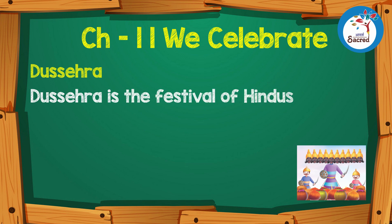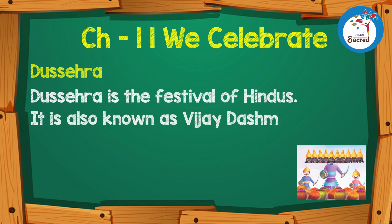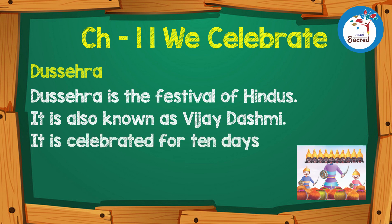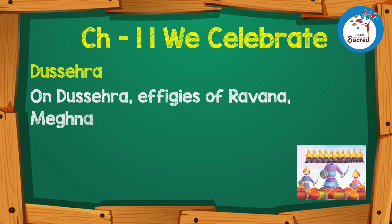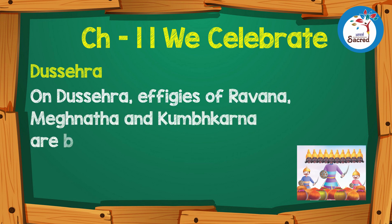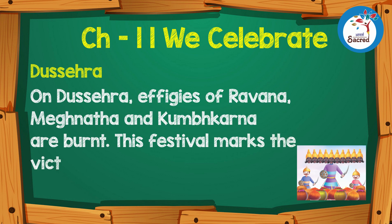Dussehra is the festival of Hindus. It is also known as Vijaya Dashami. It is celebrated for 10 days. On Dussehra, effigies of Ravan, Meghanath, and Kumbhkaran are burnt. This festival marks the victory of good over evil.